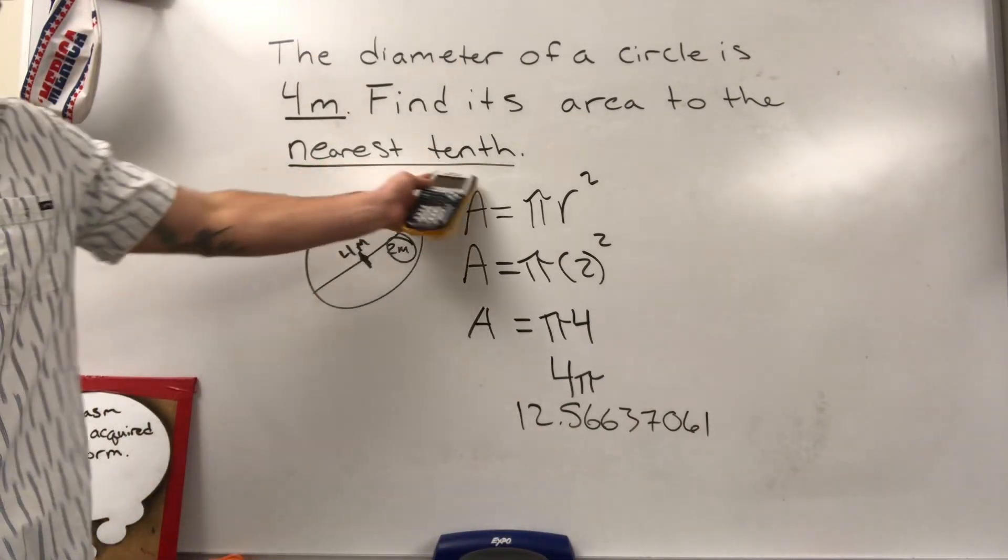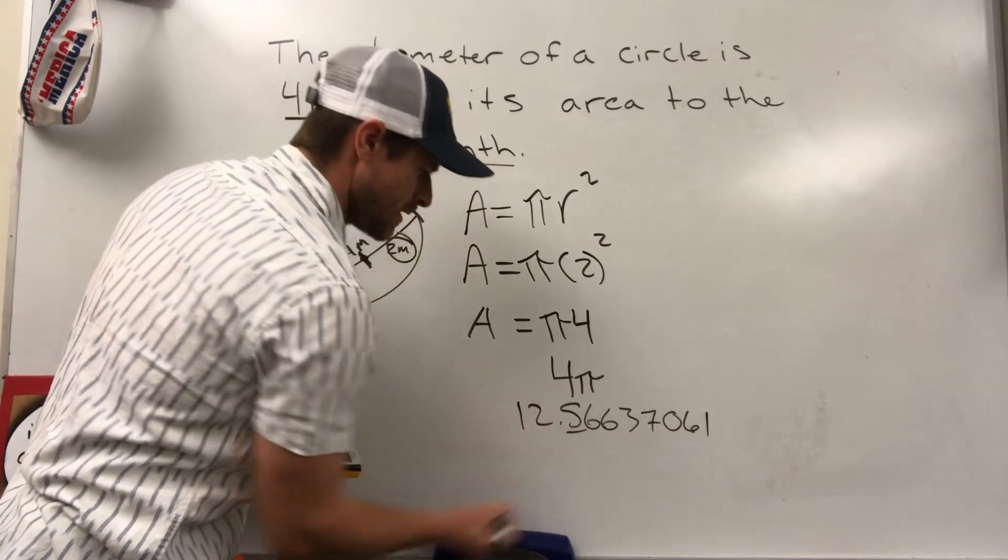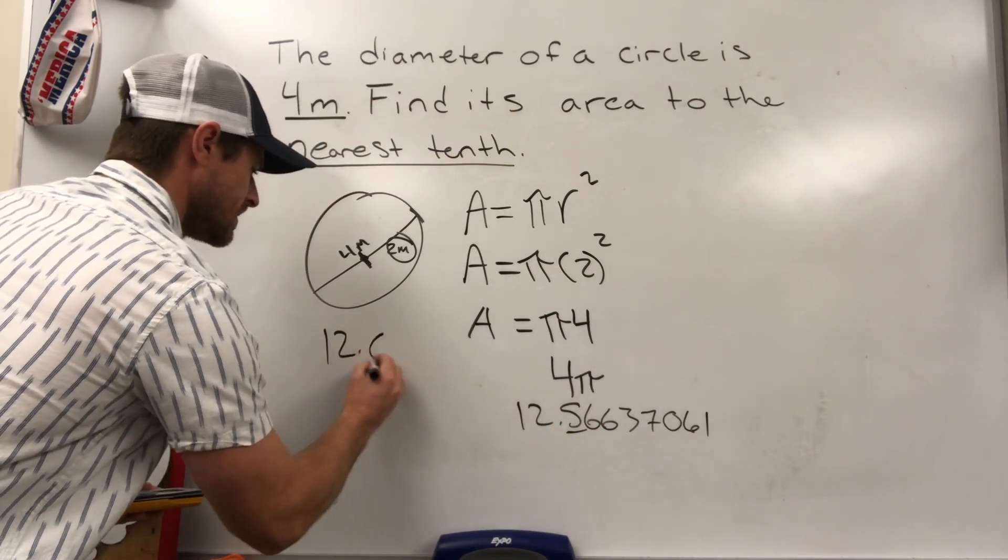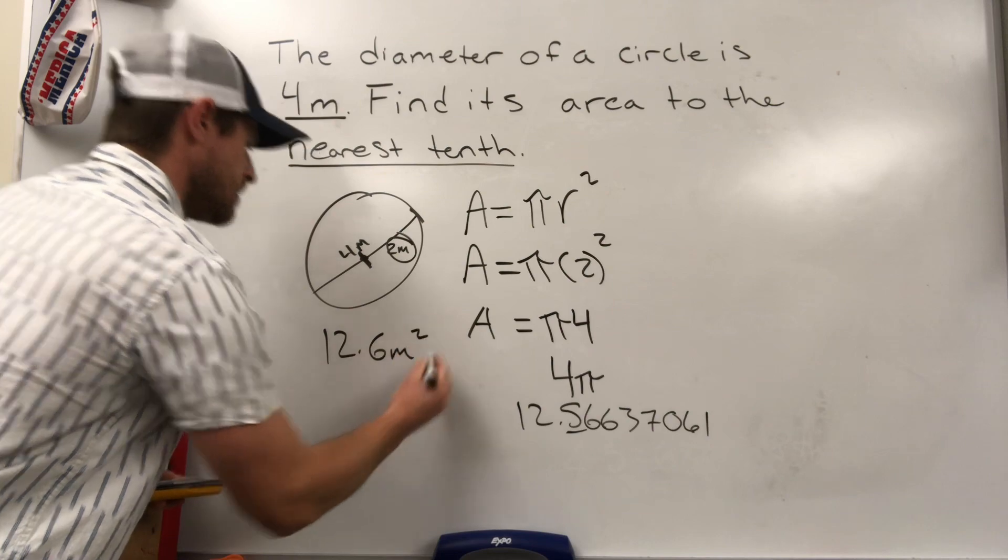Rounding it to the nearest tenth place means we only got to go to that value right there. That six tells me to bump it up. So our answer is 12.6 meters squared.